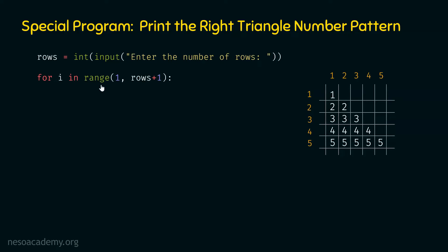We will get the sequence 1, 2, 3, 4, and 5 from this range function, with these values provided to variable i one at a time. Within the outer for loop, we need another for loop. We write: for j in range(1, i + 1). Variable j represents the column number.